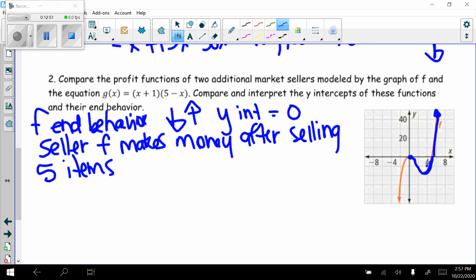So we know that seller f makes money after selling 5 items. And look at what the graph does. The graph then just continues to go up. My end behavior is up over there and continues to make money. Continues to make money for every item sold after 5.